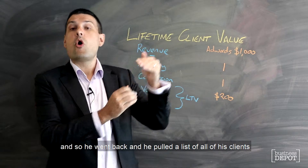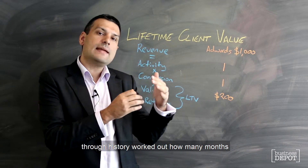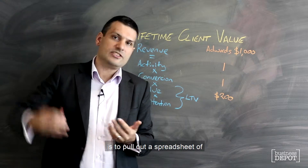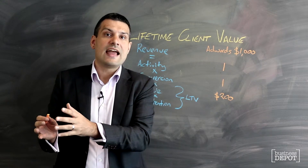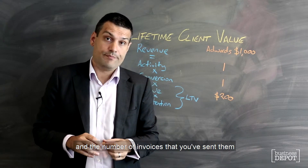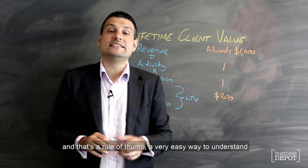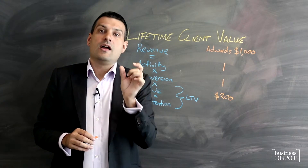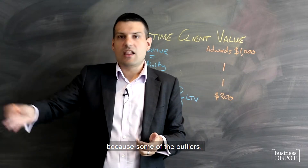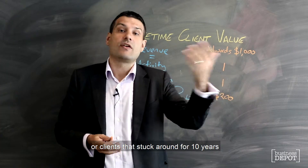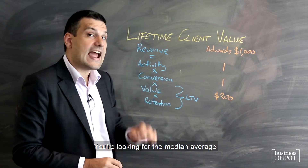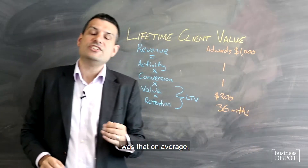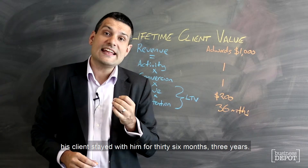He went back and pulled a list of all of his clients through history and worked out how many months they had stayed on as a client. For him and for most businesses, the easiest way to do that is to pull out a spreadsheet of every business client you've ever invoiced and the number of invoices you've sent them — that's an easy rule of thumb for how many months they stayed on. Then you're looking for the median average. Don't use the standard mean average, because outliers — clients that left immediately or stuck around for 10 years — will skew the numbers.